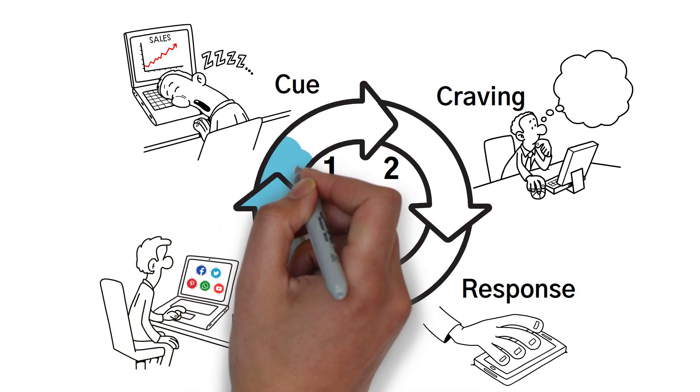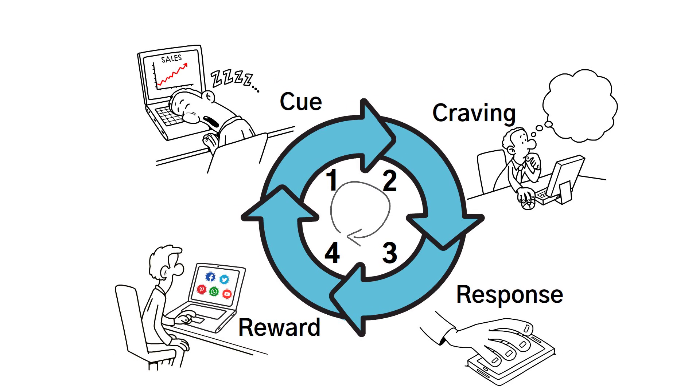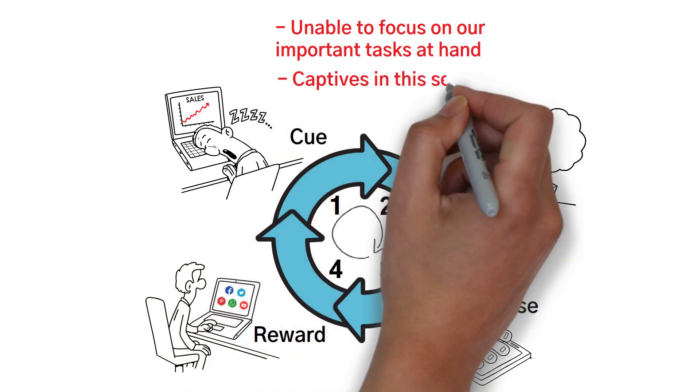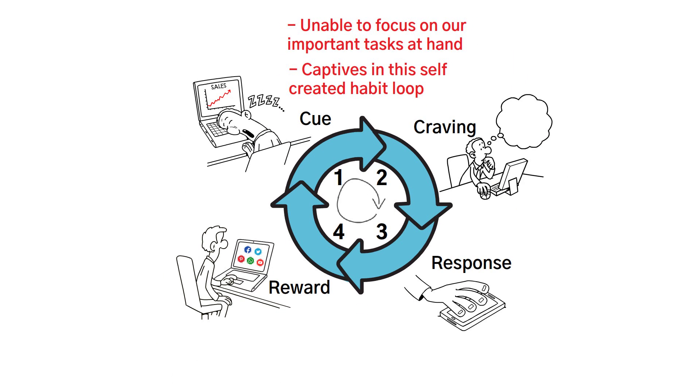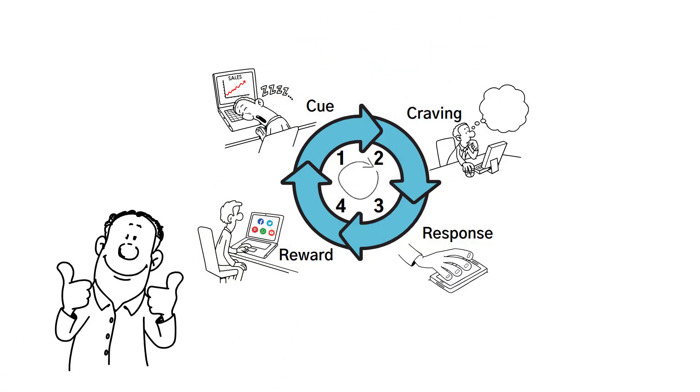It happens at a subconscious level. You don't even know and you're already there. That is why we fail to realize how we easily get distracted while working. We're unable to focus on our important tasks at hand because we're captives in this self-created habit loop. But here's the good news.